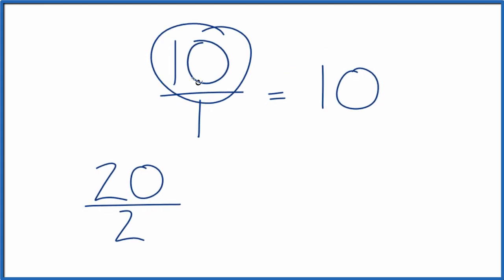How about we multiply the numerator and the denominator by 3. 3 times 10 is 30. 3 times 1 is 3. Another equivalent fraction.